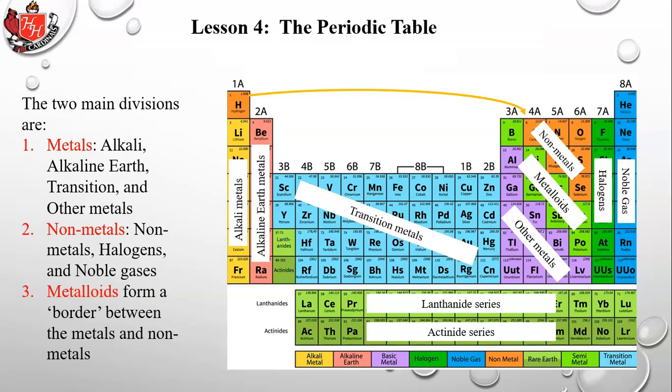Non-metals are on the right side in orange, and the halogens are group 7A — also non-metals, but they get their own name because of their special reactive properties.